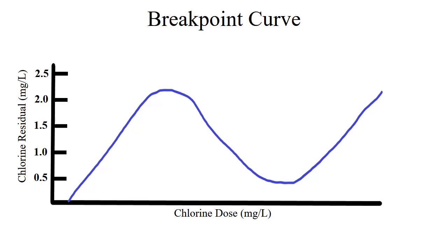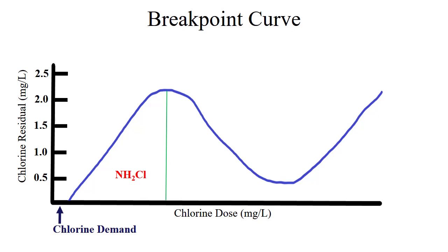When chlorine is added to the water, it reacts with compounds that have an oxidant demand. This is called a chlorine demand. For example, iron, manganese, and natural organic matter react with chlorine but do not form a chlorine residual. Consequently, there is a gap on the x-axis before the curve starts to develop. This gap will vary depending on water quality. Once the chlorine demand is met, the chlorine can react with ammonia to create monochloramine. As more chlorine is added, the monochloramine concentration increases until it reaches the maximum at this peak. At this point, the chlorine-to-ammonia-as-nitrogen ratio is 5 to 1.